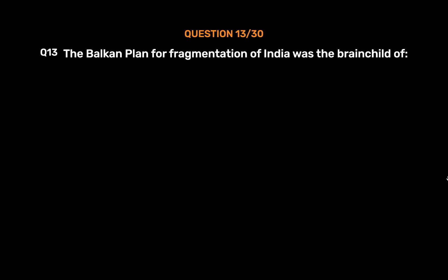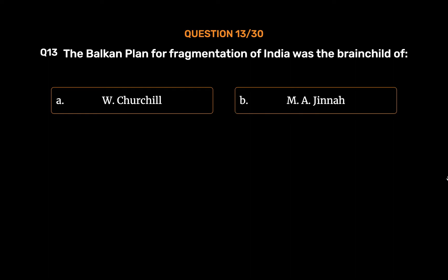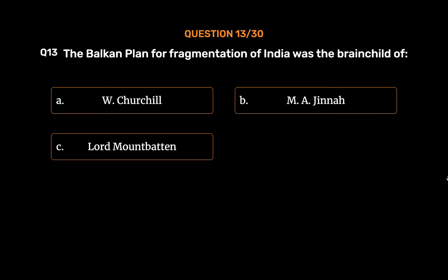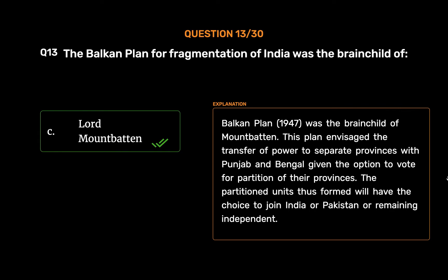Question No. 13. The Balkan plan for fragmentation of India was the brainchild of: Option A: W. Churchill. Option B: M. Jinnah. Option C: Lord Mountbatten. Option D: V.P. Menon. The correct answer is Option C: Lord Mountbatten. The Balkan plan, 1947, was the brainchild of Mountbatten. This plan envisaged the transfer of power to separate provinces with Punjab and Bengal given the option to vote for partition of their provinces. The partitioned units thus formed would have the choice to join India or Pakistan or remain independent.